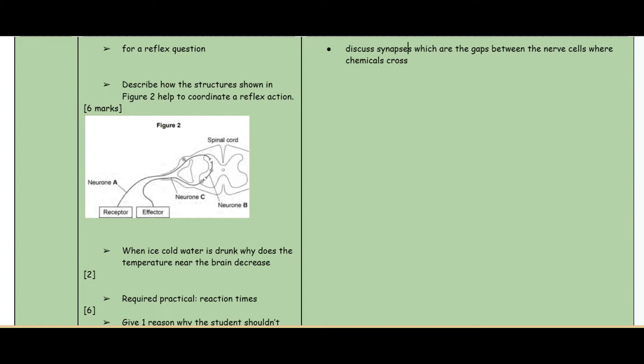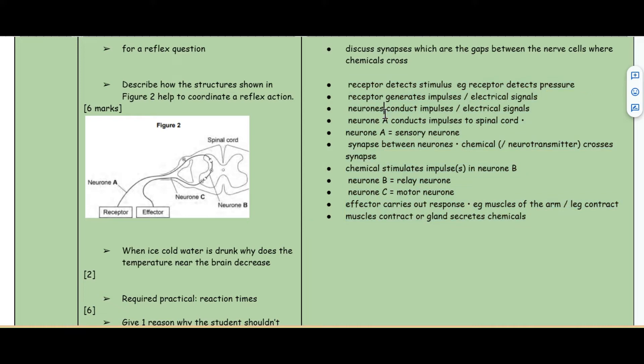The next question is a diagram question: describe how the structures shown in Figure 2 help to coordinate a reflex action for six marks. This is quite a detailed question. The receptor is detecting a stimulus, it then generates an impulse. The neurons are conducting this impulse and neuron A is conducting the impulse.